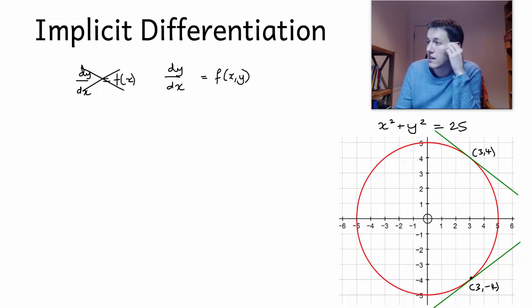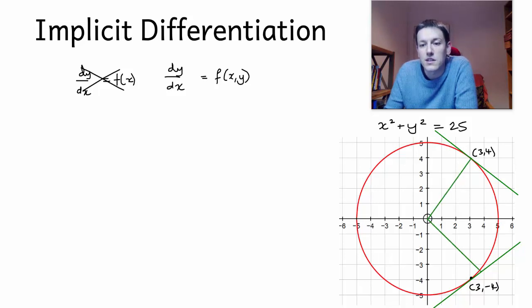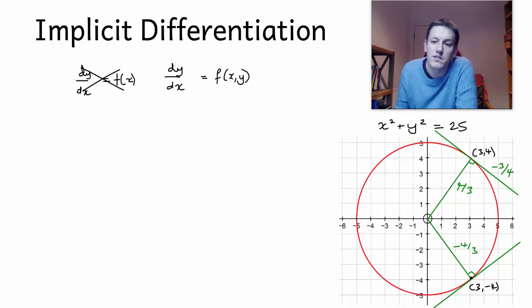In fact, the gradients of these two tangents are not too hard to work out. If you remember some of your circle theorems, if I were to put some radii in here, and remember that the tangent is perpendicular to the radius, we can quite quickly see that the gradient of this first radius here is 4/3. So the tangent is perpendicular to that, so it has to have gradient -3/4. And similarly, the other radius has gradient -4/3, so this tangent has gradient +3/4. And we'll use that to check what we do in a second.